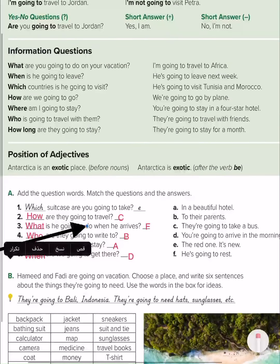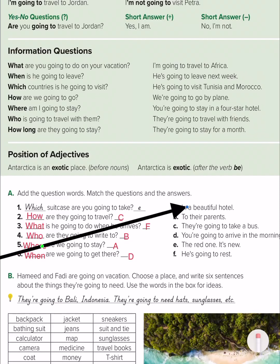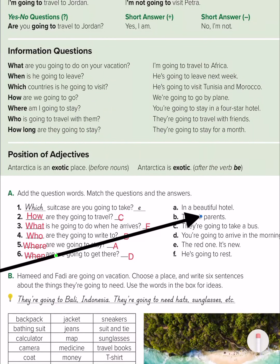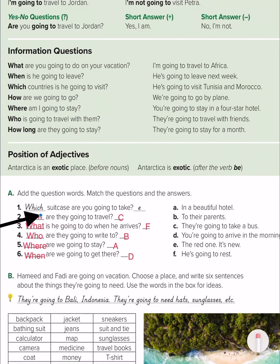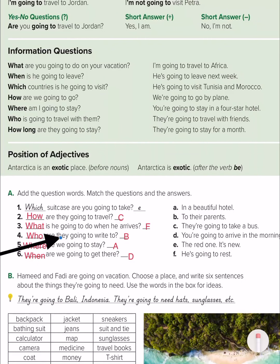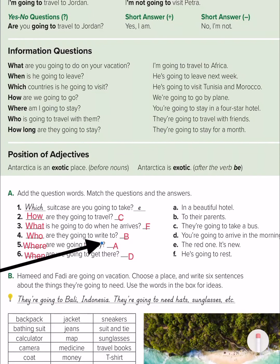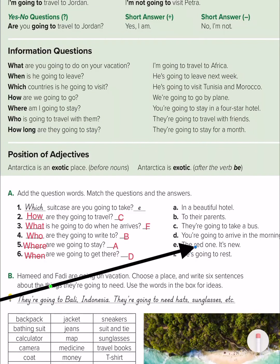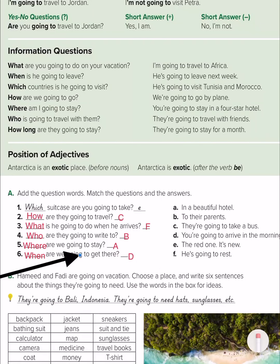Now look at the exercise: add the question word and match the questions and answers. We have six questions and six answers. 'How are they going to travel?' — 'They are going to take a bus.' 'What is he going to do when they arrive?' — 'He is going to rest.' 'Who are they going to write to?' — 'To their parents.' 'Where are you going to stay?' — 'In a beautiful hotel.' 'When are you going to get there?' — 'They are going to arrive in the morning.'